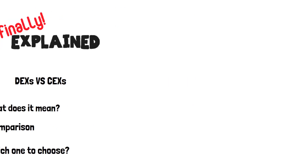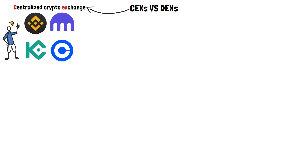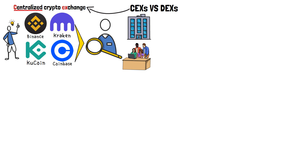Let's start by jumping straight into the fun stuff and talk about what are CEXs and DEXs, starting with the former. What is a centralized crypto exchange, or a CEX? Most of the exchange platforms that you've heard about are probably CEXs — these include Binance, Kraken, KuCoin, Coinbase, and so on. Centralized is the key term here: essentially, it means that all of these exchanges have a single governing authority behind them, such as a company or a designated team of people looking over and managing all of the processes of the exchange.